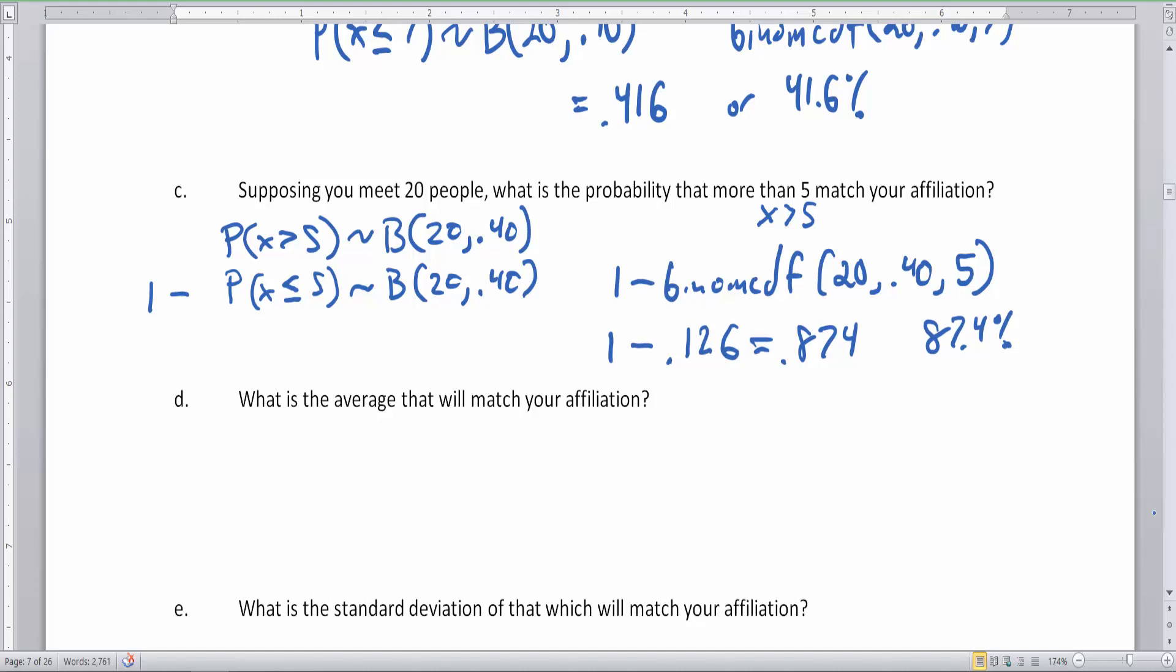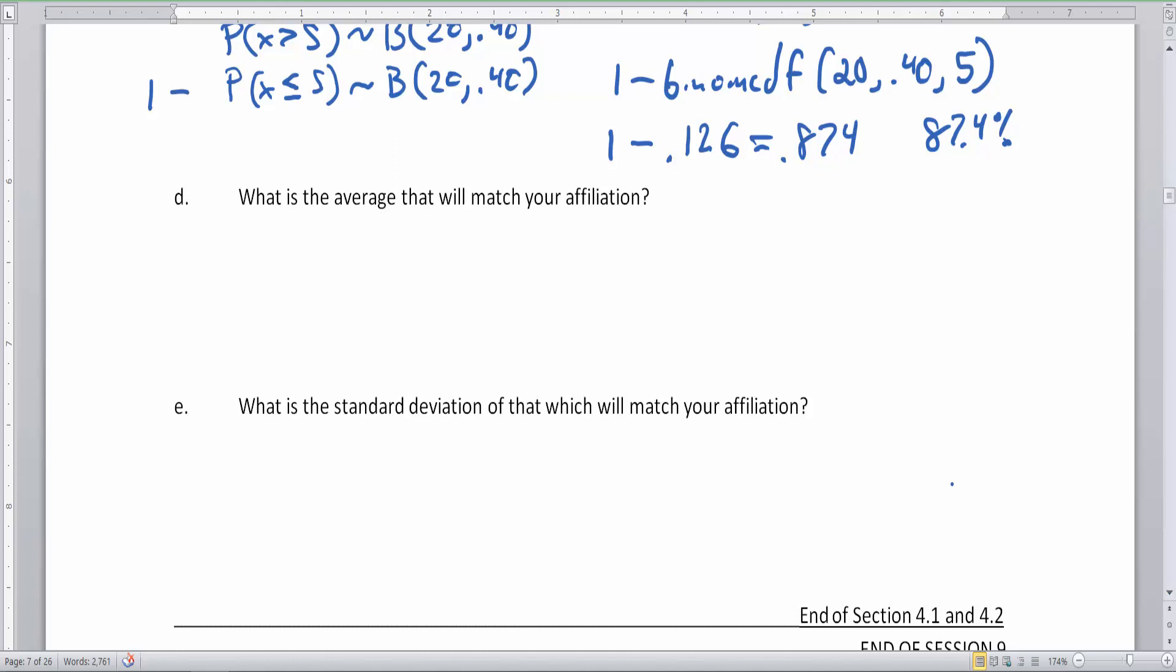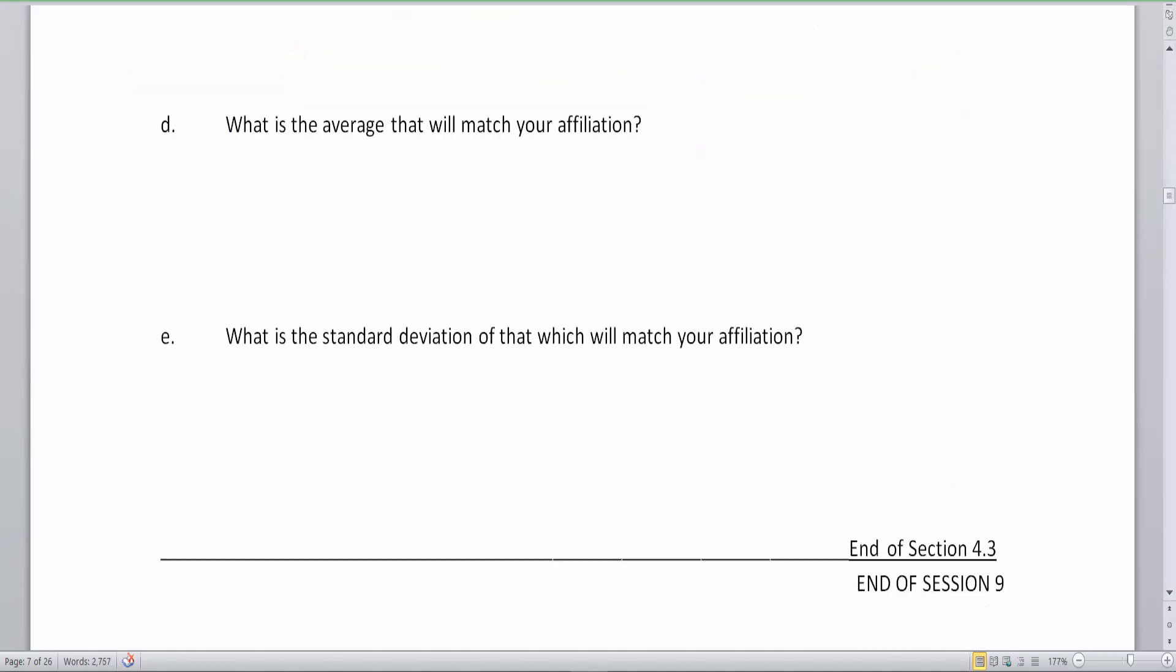So let's now talk about the average and the standard deviation that will match your affiliation. If you remember back to the beginning of this video, we had a pretty quick and simple formula for average here because we are going to take n times p and this will give us our theoretical average here. So the n in this case is the number of people in the group or the number of people in that trial, which is 20. And then your p is a chance of matching your political affiliation. And 40 times 20 is going to be 8. And this would be exactly 8 people will agree with you on average.